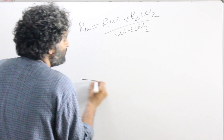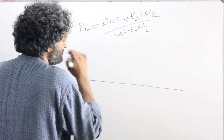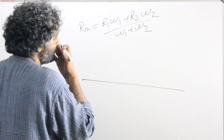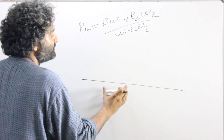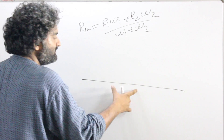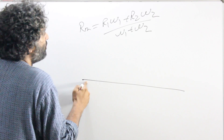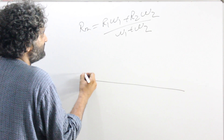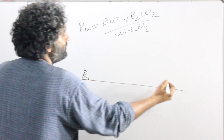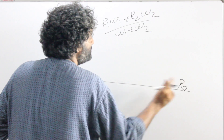This is called the scale method, also called allegation in some areas. Draw a line first of all — I'm telling it step by step. It's a very easy step. On one side of the line, write rate 1. On the other side, write rate 2.